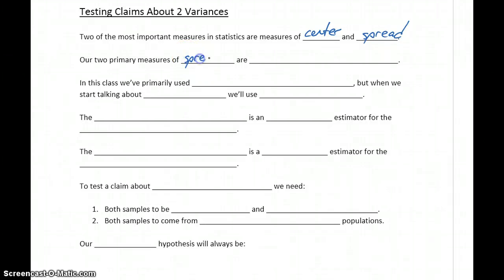Our two primary measures of spread are standard deviation and variance. We also have interquartile range, but in terms of testing claims, we're just going to look at standard deviations and variances.